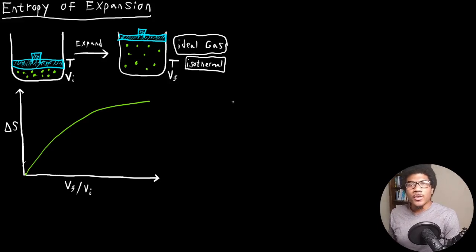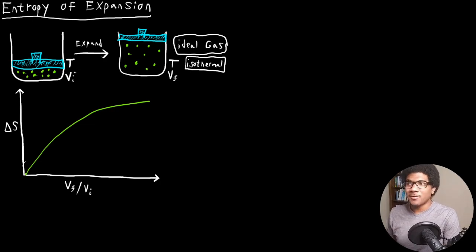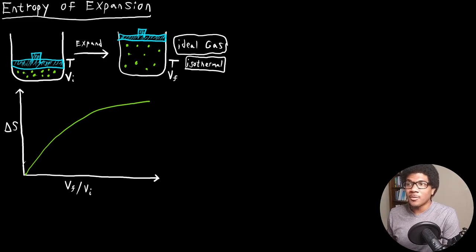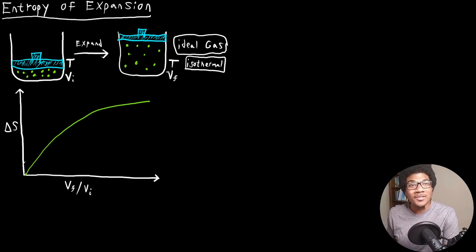In this video, we're going to look at the entropy of expansion for an ideal gas. Our general problem is going to be the same we've seen before: we have a gas expanding from some initial volume, VI, to a final volume, VF, in an isothermal fashion — the temperature is held constant. So we're looking at an isothermal reversible expansion for an ideal gas. The new question we want to address is: what is the entropy change for such an expansion?